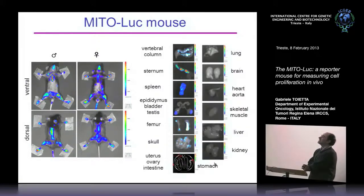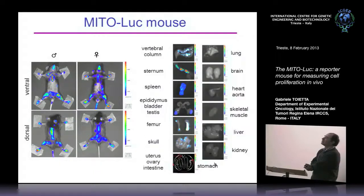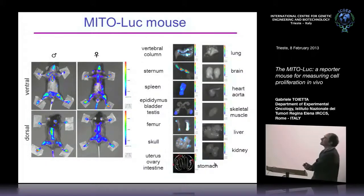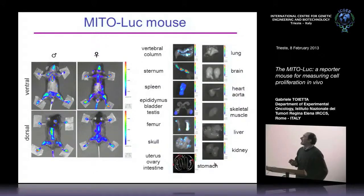Looking at dissected organs, the strongest signal comes from the bones — the sternum, the bones on the back of the animal, and also the limbs, including the femurs. There is also a pretty strong signal in the spleen. In the dissected organs you can see a very nice strong signal in the sternum, the femur, and a high signal in the spleen.